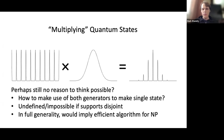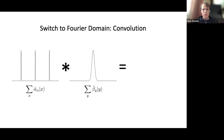The point of this talk is to show that there are some cases where we can actually do this in a meaningful way, leading to interesting results. What we're going to do is look at the Fourier domain for our two input states and the output state — a very natural thing to do, since quantum Fourier transforms are one of the core building blocks of most quantum algorithms we know.